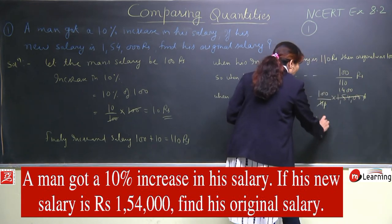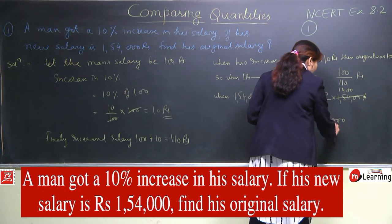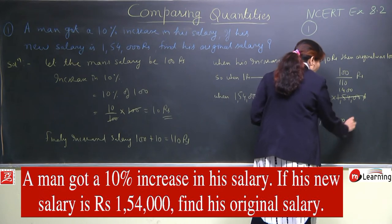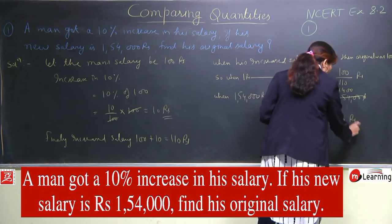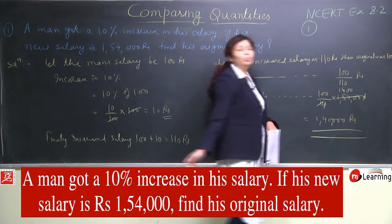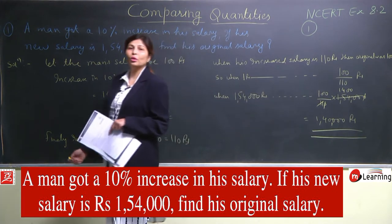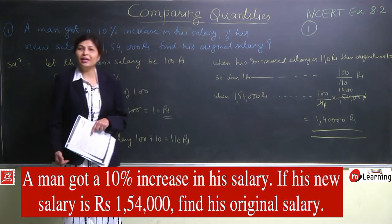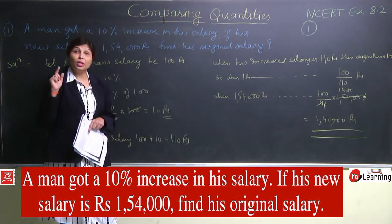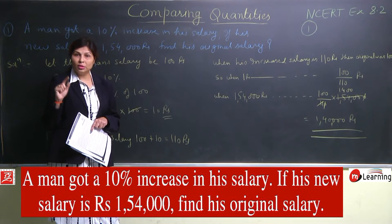Finally the answer is 1,40,000 rupees. Simple way mein answer aa gaya — uski original salary kitni hogi: 1,40,000 rupees.